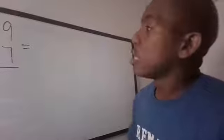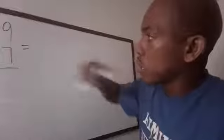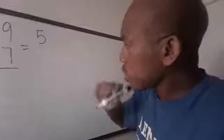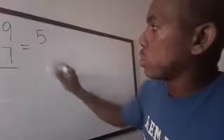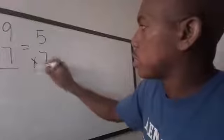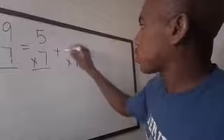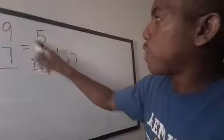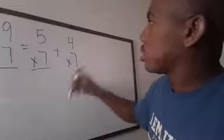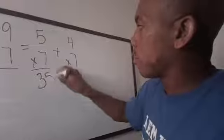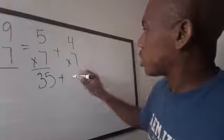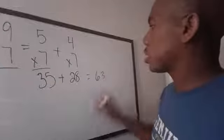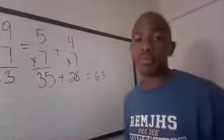Nine times seven — break it down. The next closest timetable is five, so keep seven constant. Five plus four equals nine, so this becomes five times seven plus four times seven. Five times seven is thirty-five, four times seven is twenty-eight, and thirty-five plus twenty-eight is sixty-three. That is correct!